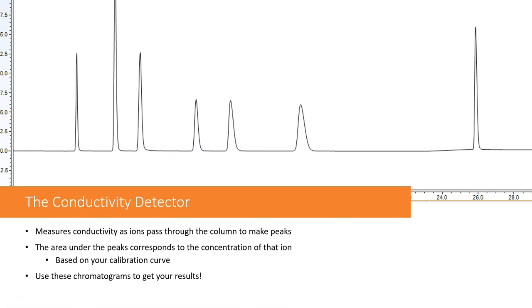The conductivity detector measures conductivity as ions pass through the column, and this makes peaks. As an ion passes through, the conductivity increases and it can move on to the next ion.